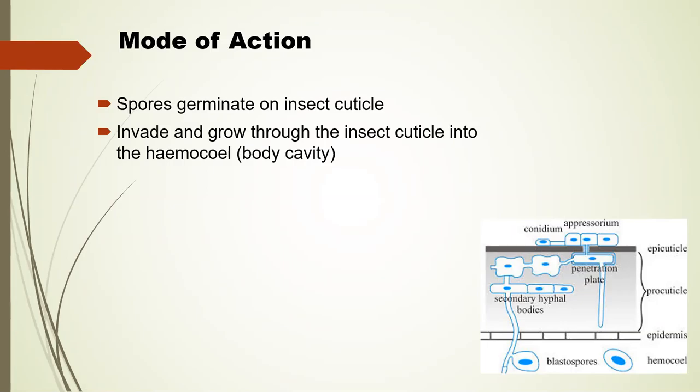Once they get through, they usually form a penetration plug and then secondary hyphal bodies. When they get into the cavity of the insect, there's variation: some fungi produce a yeast-like stage, a blastospore; some produce protoplasts without any cell wall; and some of the lower fungi just stay in hyphal form. So there is quite a bit of variation in what happens once they get inside.